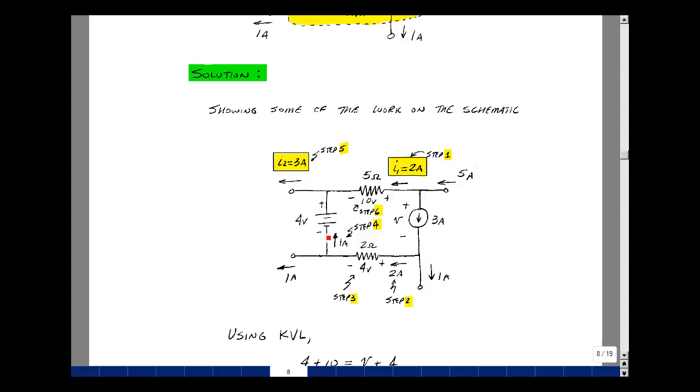Now I know all the voltages around this loop except the unknown voltage V. Start anywhere, I'm going to go around clockwise. So the rise in voltage is 4, the rise in voltage is 10, the drop is V, and the drop is 4. So 4 plus 10 has to equal V plus 4. And that's shown on the bottom.